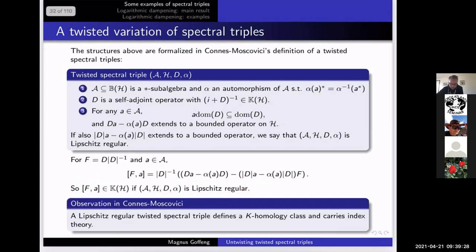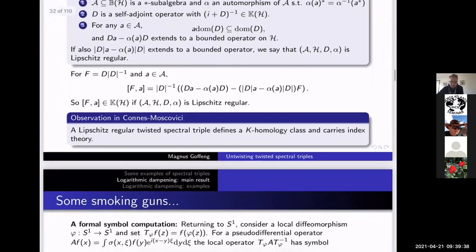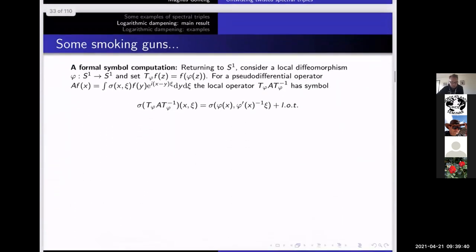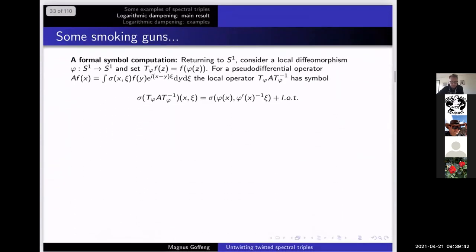And the observation of Connes–Moscovici is that if you have Lipschitz regularity, then you get a K-homology class. So now let's speculate a bit, because there are some smoking guns here of how to treat twisted spectral triples.